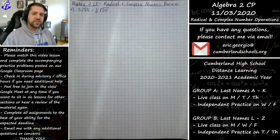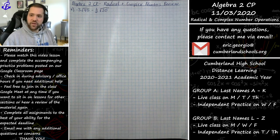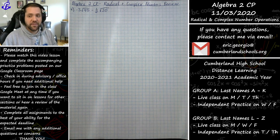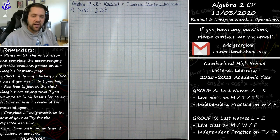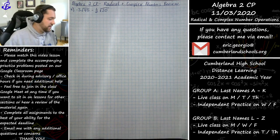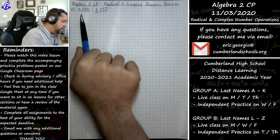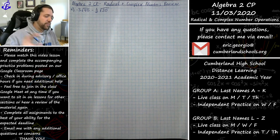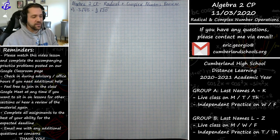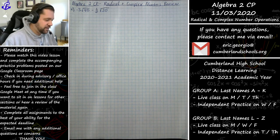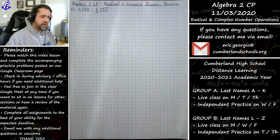Hello Algebra 2 CP students. I wasn't planning on doing this originally but I think it will help if I create a short video doing a couple problems from the test review. I have seven problems in particular that I'd like to get through to help prepare you for the summative assessment on radical and complex number operations later this week. These problems mirror the difficulty of what you'll see on the actual assessment.